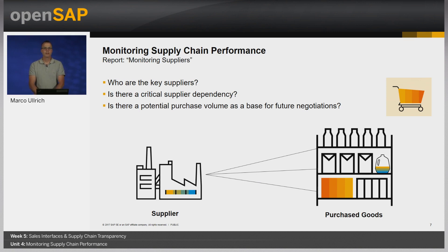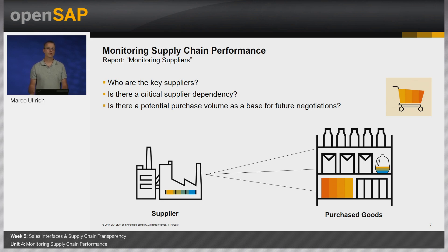The next report is Monitoring Suppliers, which is a useful report to show the dependency on suppliers for certain product categories, the spend per supplier, and the supplier distribution per country over a certain time period. Key questions it answers: who are my key suppliers, is there a critical supplier dependency for a key product category or net amount volume spent, and is there potential purchase volume for future negotiations, for example by combining across different companies?